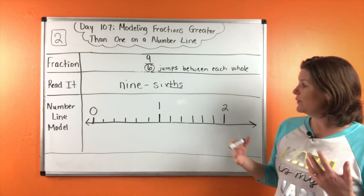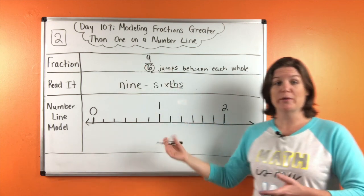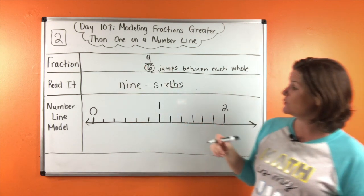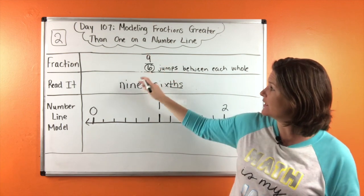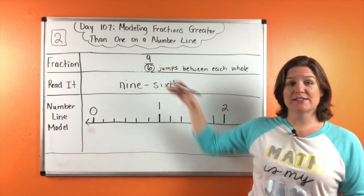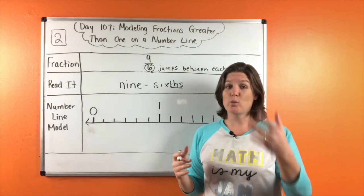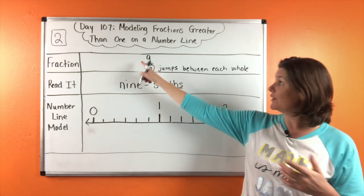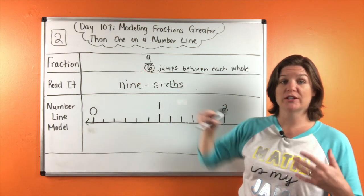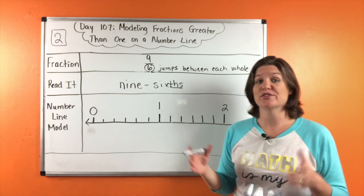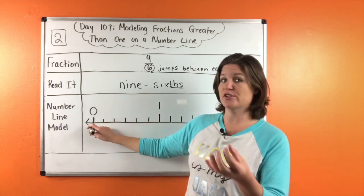Okay. So now we can go ahead and try to plot this point. Now we might need to extend this a little bit more, but let's see where we're at. So nine sixths. Now nine sixths. Unlike number one, we don't have a whole number before in this fraction to let us know which number it's between.